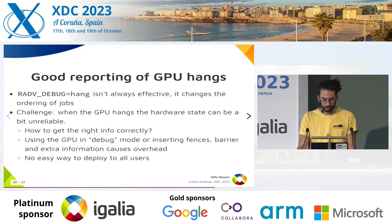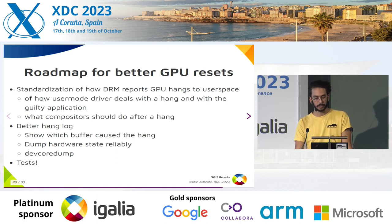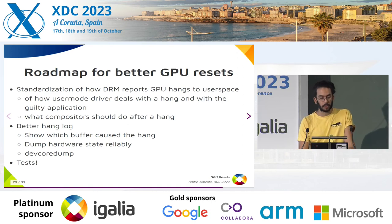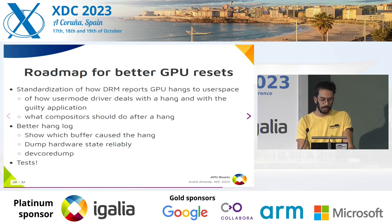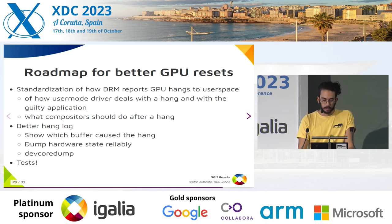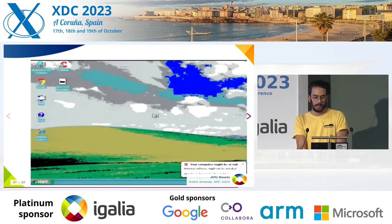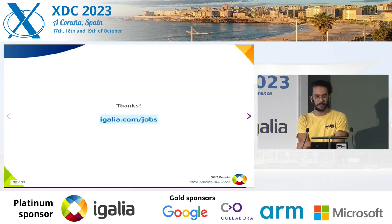We have the challenge of how to get information from the hardware in a reliable way that we can deploy to everyone. In summary, the roadmap to have better GPU resets on Linux would be: better standardization of how DRM reports GPU hangs to user space, how user-mode drivers deal with hangs, what compositors should do after a hang, better hang logs to show which buffer caused the hang, a reliable way to dump the hardware state using devcored dump, and a lot of tests all over the stack to track whether resets are working. Here are a bunch of links if you want to see the discussion. That was it for my presentation.